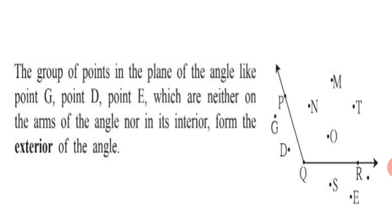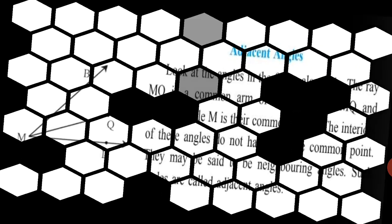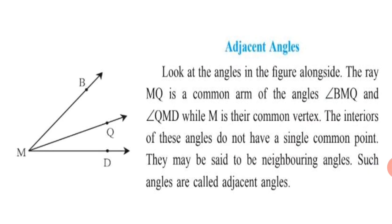I hope you have understood what are points in the interior and points in the exterior of an angle. Now let us learn more. Today we are going to learn about what are adjacent angles. Look at the angles in the figure alongside. Ray MQ is the common arm of Angle BMQ and Angle QMD, while M is their common vertex.